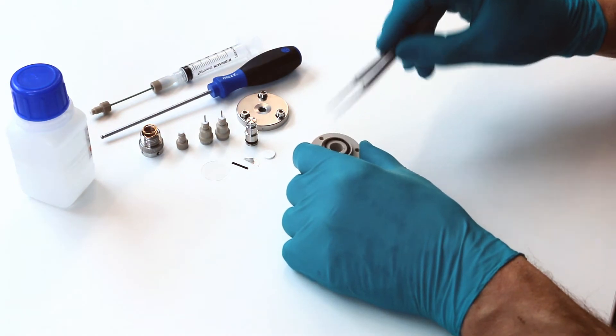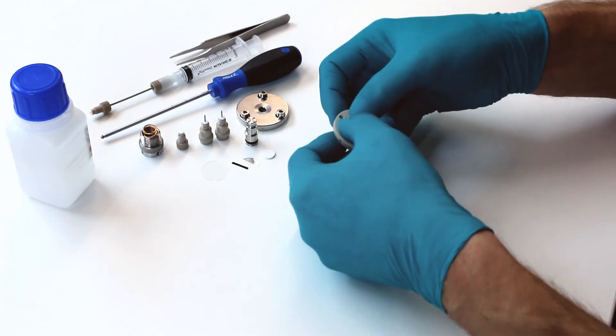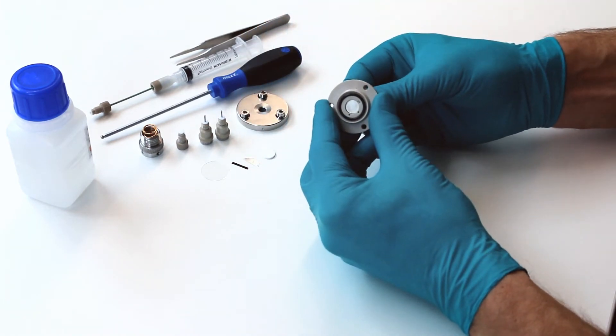Now, we start the assembly by inserting this O-ring seal into the cell base, then attach the central piston.